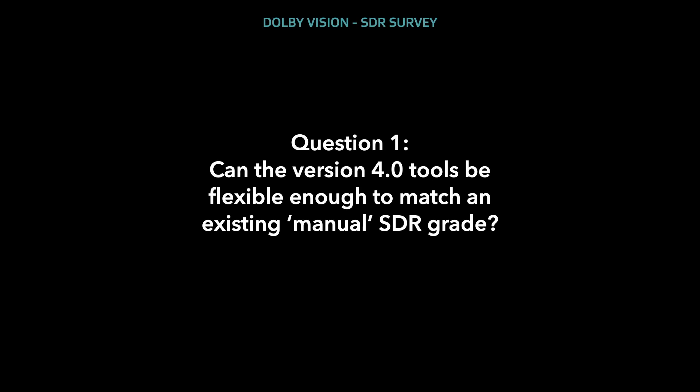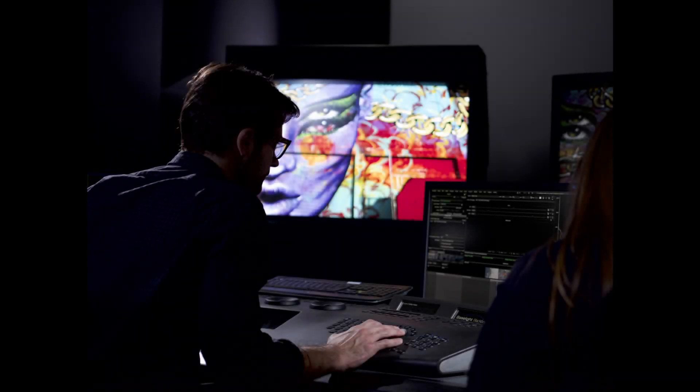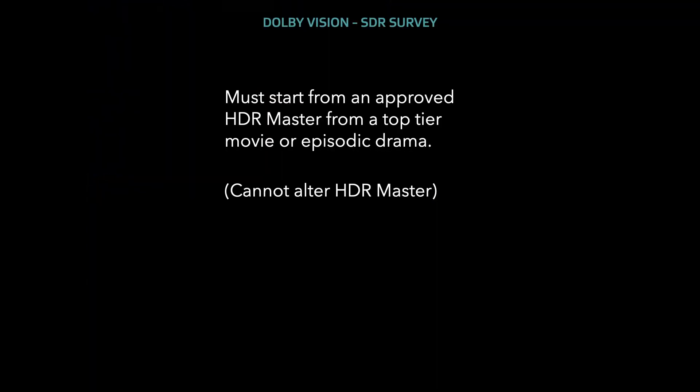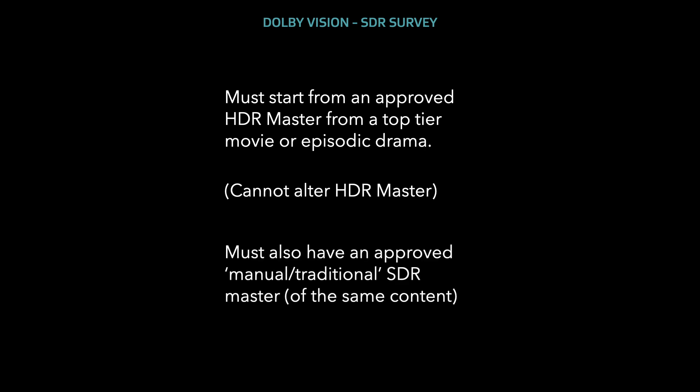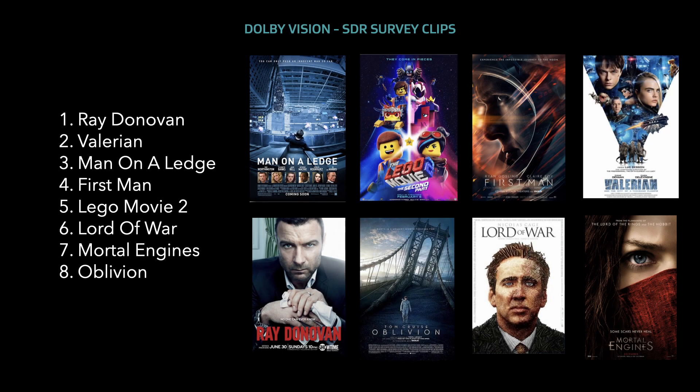The first question we set out to answer was: can the 4.0 analysis and artistic trim tools be sufficient enough for a colorist to match an existing SDR-approved look from a traditional manual hand grade? We set out to test this ourselves and try to match the look of an existing SDR grade across a relatively wide variety of content in our own Dolby Burbank labs. The basic requirement for the clips we would use was that we had to have an approved HDR grade and a separate matching approved manual SDR grade. Several studio partners agreed to help us with the experiment, and we ended up with eight titles.